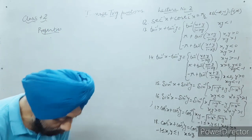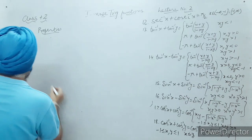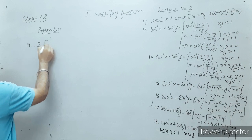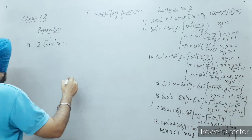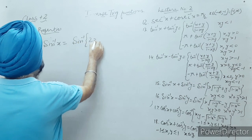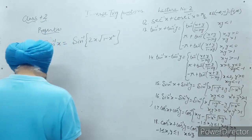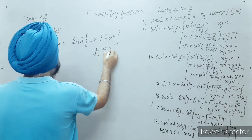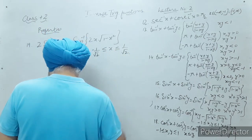Now I have written 18 properties. The 19th property is: 2 sine inverse x equals sine inverse of 2x times root(1 minus x²), with the condition that minus one by root 2 is less than or equal to x less than or equal to one by root 2. This comes from the formula of sin 2θ, which is 2 sin θ cos θ, and cos θ is changed into root(1 minus sin²θ).